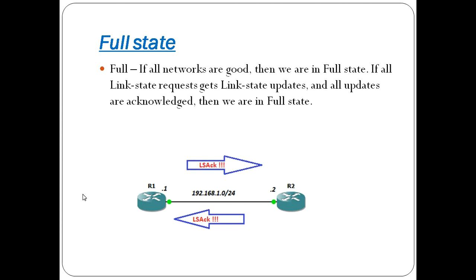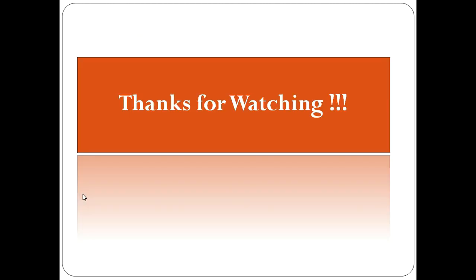After receiving the update, the router sends a link state acknowledgment for all packets. When all requests are fulfilled with updates and acknowledgments, the routers reach the full state. This is the OSPF neighbor adjacency and its seven states. If you have questions or doubts, just leave a comment. Thanks for watching until next time.